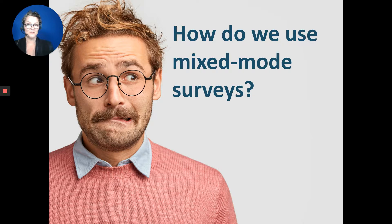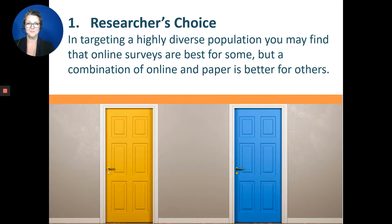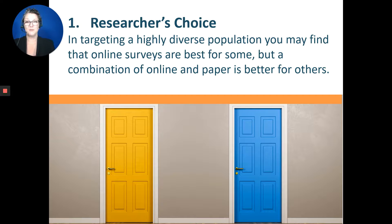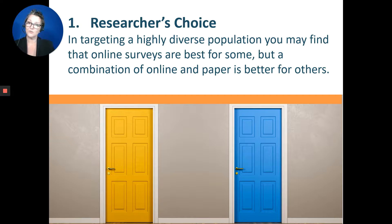So how do we actually do mixed mode surveys? One approach I like to call researcher's choice. This is when I, as the researcher, am planning a survey project and I know my population is diverse. For example, some people in my audience may be unlikely to respond to an online survey but more likely to respond to a paper survey delivered by postal mail. Rather than forcing everyone into the online survey, I segment my sample and invite people to participate in the way that will get the best response rates and highest quality data from each subgroup.